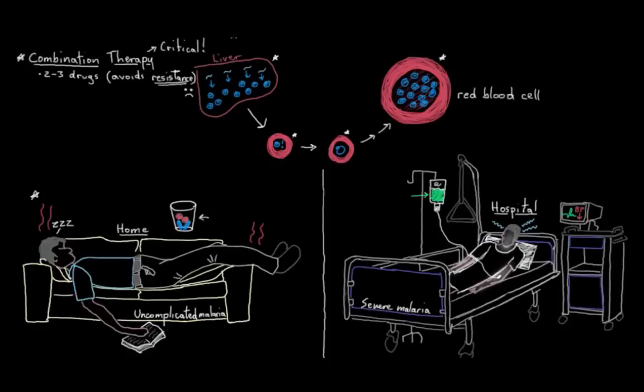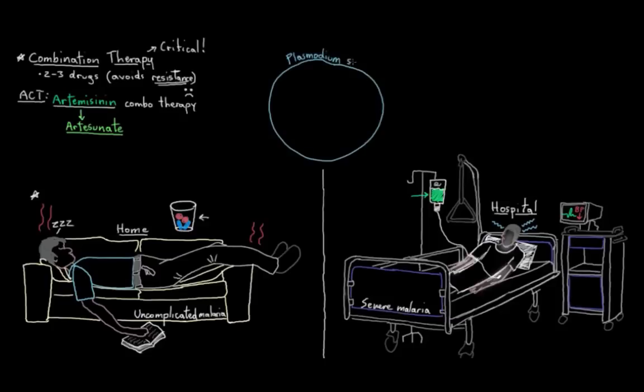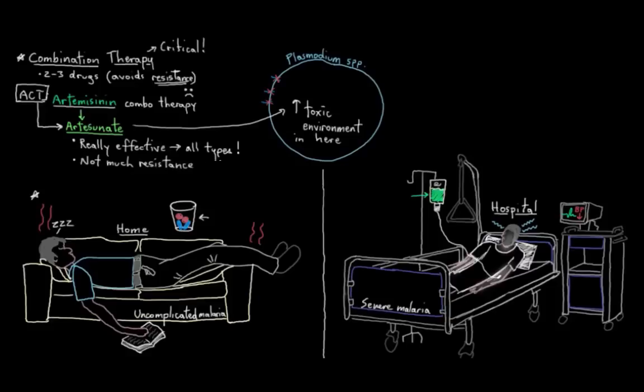The recommended combination for treating uncomplicated malaria is called ACT - artemisinin combination therapy. Artemisinin is actually the name of a plant that we get this main drug from. The drug is called artesunate, and we get it from the artemisinin plant. So artesunate does a few things - it creates a really toxic environment in the parasites that can kill them, and it interferes with some pretty important proteins on the plasmodium surface that allow them to get their nutrients. The reason ACT is built around artesunate is because it's really effective against all types of plasmodium, and there's not really much resistance to it right now.